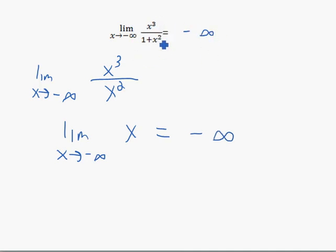Using just the degree rule, the degree of the top is bigger, which means that the top is going to grow bigger than the bottom, and it's either going to go way up or way down.